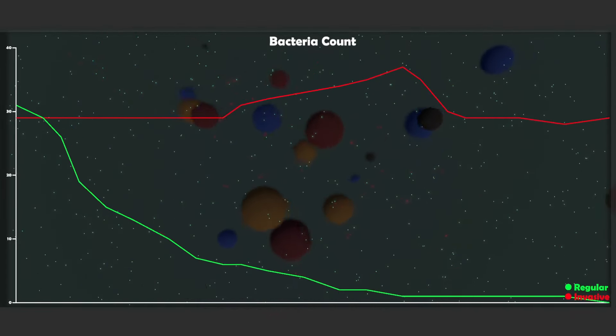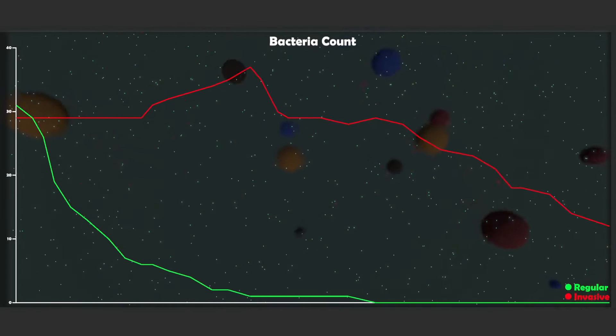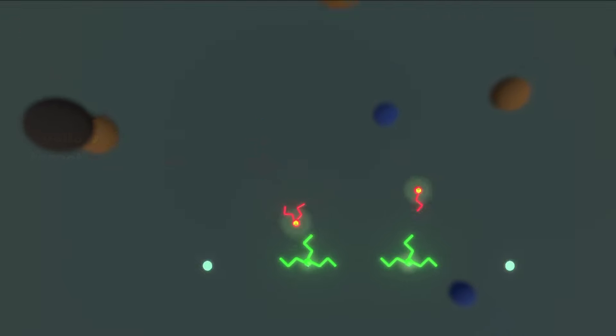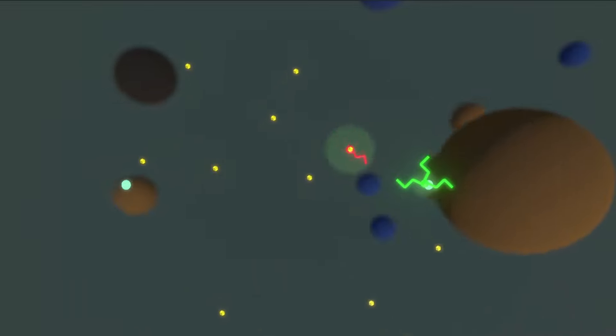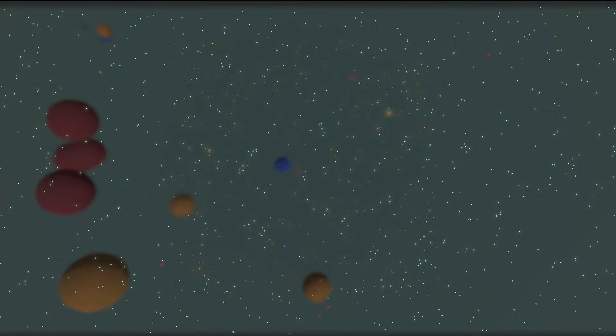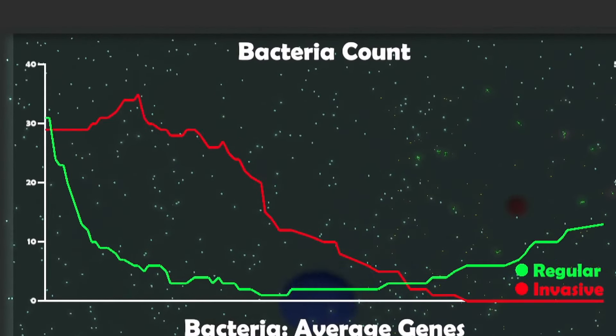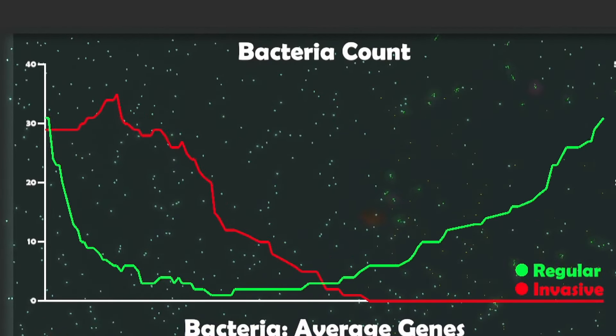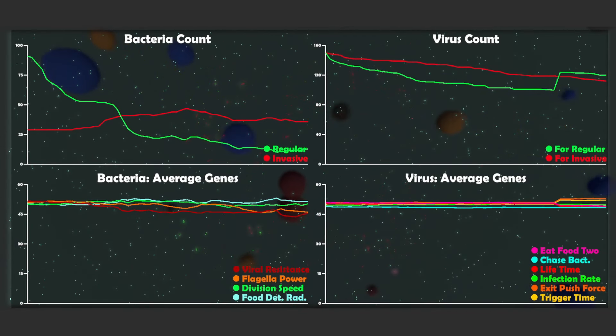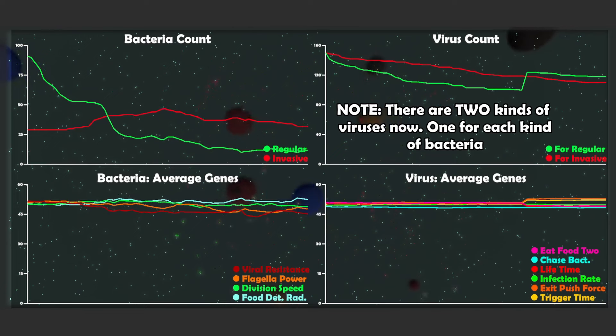Now that we have established that regular bacteria have no chance of surviving, let's see if we can keep the invasive bacteria's population in check by using viruses. Now these viruses will be special and they will only target the invasive bacteria. You can see that here the invasive bacteria almost wiped out the regular ones, but then they all died due to the virus infection. Now I have doubled the amount of bacteria so that we can actually have the simulation going before the viruses wipe out everyone.